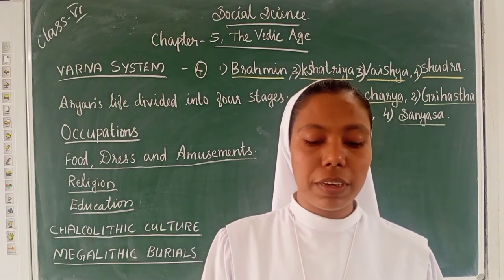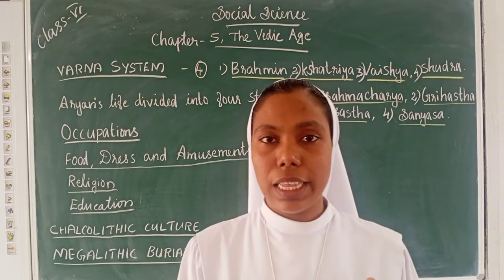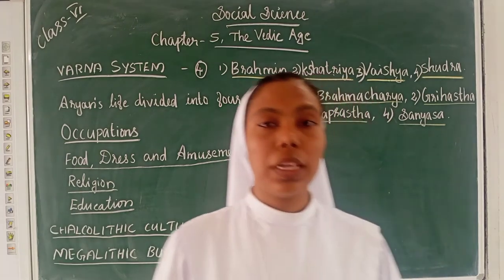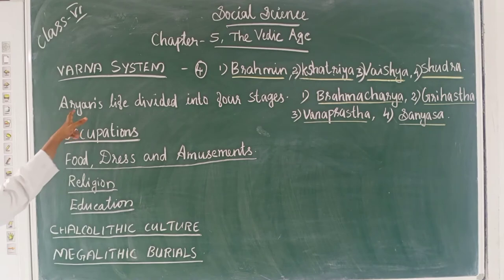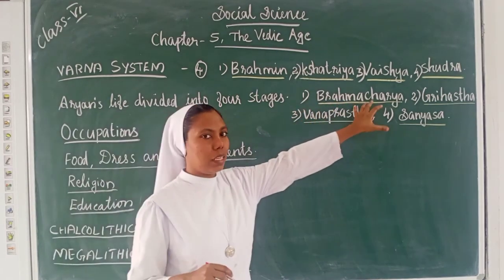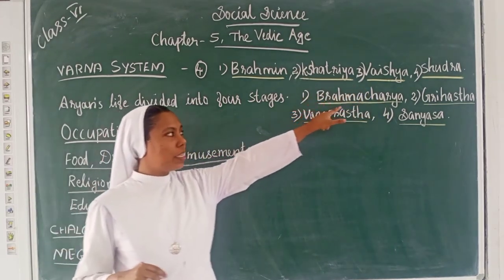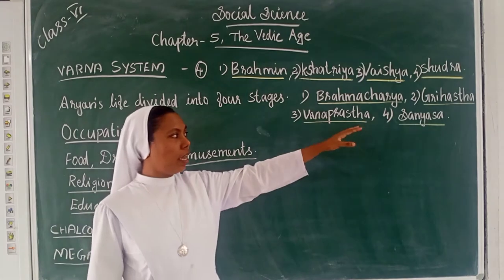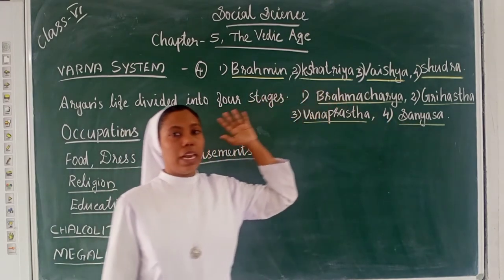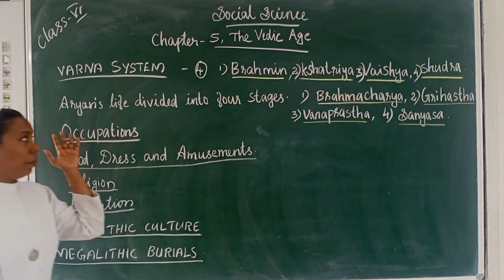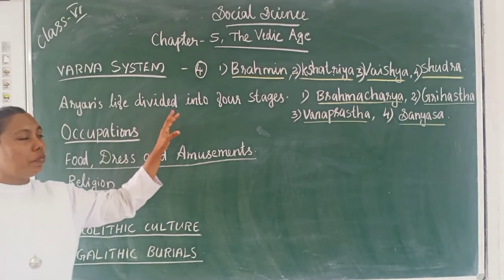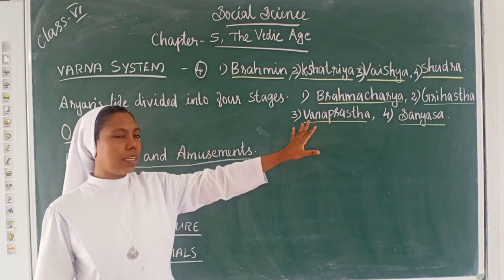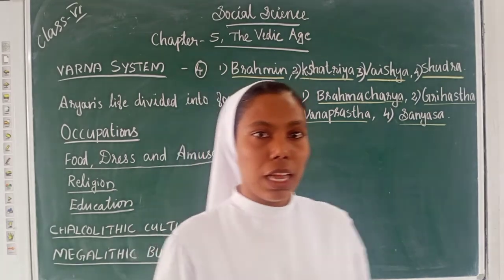The Aryan life was divided into four stages. The first stage is Brahmacharya, the second is Grihasthya, the third is Vanaprastha, and the fourth is Sanyasa. These are the four stages of the Aryan life.